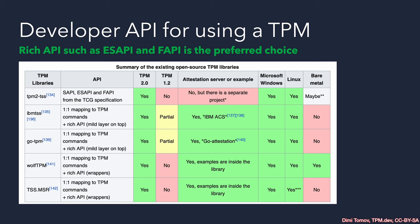FAPI stands for Feature API. The distinction between SAPI and FAPI is that FAPI is a very focused set of functions. On the other hand, SAPI still gives us some control and allows us to do almost everything. FAPI does not cover the complete functionality of the TPM — it performs the most common and most needed operations.